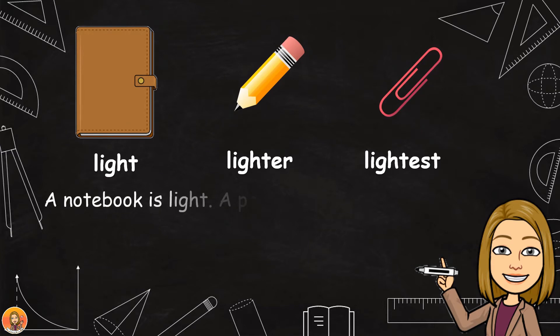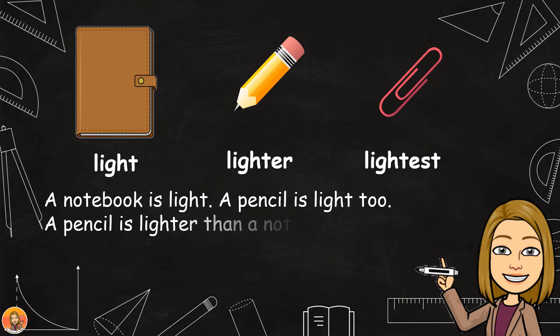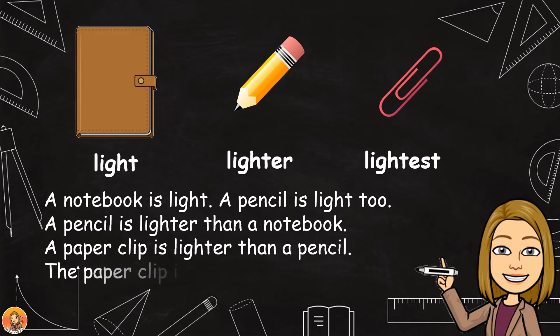A notebook is light. A pencil is light too. A pencil is lighter than a notebook. A paper clip is lighter than a pencil.